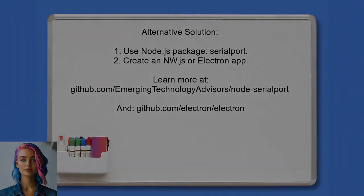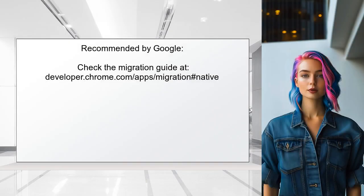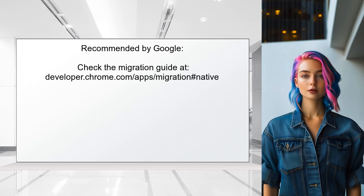You can also use a Node.js package called SerialPort to access your COM port, and create either an nw.js app or an Electron app — popular for its access to the Node module ecosystem and Chromium. This method is recommended by Google as a migration path for accessing native functionalities.